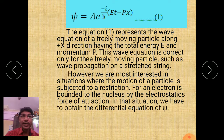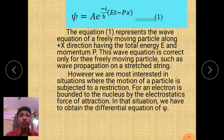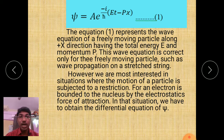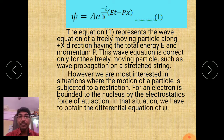This wave equation 1 represents a freely moving particle along the positive x direction. This equation is correct only for freely moving particles, such as a wave propagated on a stretched string. However, we are most interested in situations where the motion of a particle is bounded or subjected to some restriction — for example, an electron is bounded to the nucleus by the electrostatic force of attraction. In that situation, we have to obtain the differential form of the wave function psi.